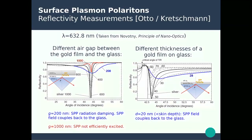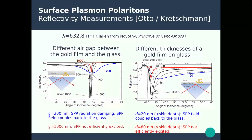For the Kretschmann configuration, a very thin metallic film leads to back-coupling between the SPP and the evanescent waves on both sides of the film. For thick films like 80 nm, the field does not propagate far enough through the metal — the thickness is much larger than the skin depth — and the SPP cannot be excited efficiently. An optimal thickness of about 50 nm is needed to excite the SPP efficiently.